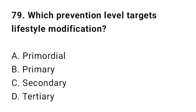Question number seventy-nine: Which prevention level targets lifestyle modification? The correct option is A: Primordial.